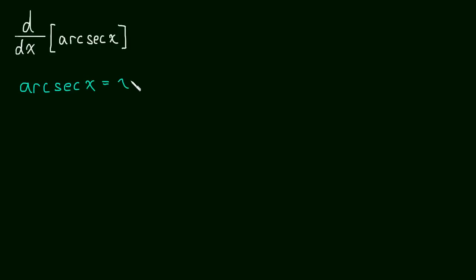I'm going to write a placeholder again, arc secant x equals y, and then realize that that means that the secant of y must equal x.